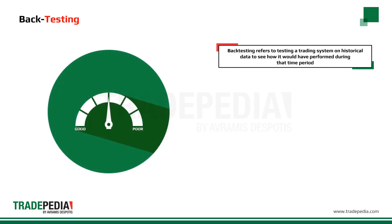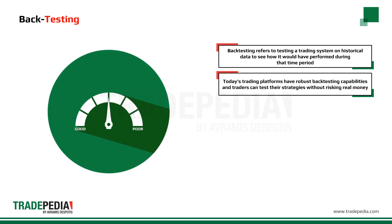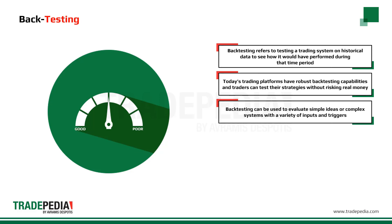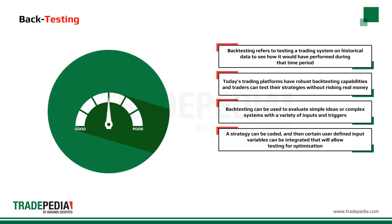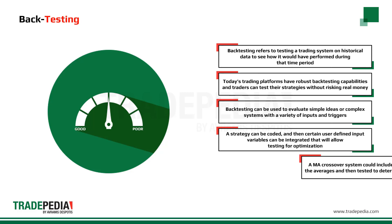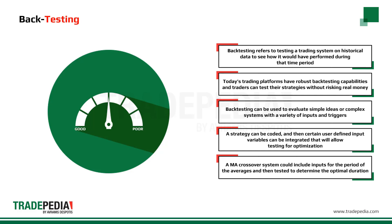Back testing refers to testing a trading system on historical data to see how it would have performed during that time period. Most of today's trading platforms have robust back testing capabilities and traders can quickly test their strategies without risking real money. Back testing can be used to evaluate simple ideas such as how a moving average crossover system would perform, or complex systems with a variety of inputs and triggers. A strategy can be coded using the proprietary language of the trading platform, and user-defined input variables can be integrated to allow testing for optimization. For example, a simple moving average crossover system could include inputs for the period of the two averages, and then be back tested to determine which duration would have performed best on the historical data.